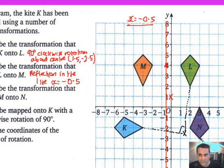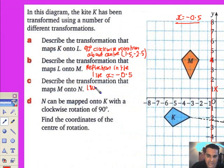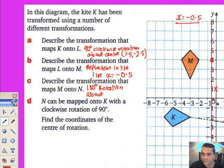It's 180 degree rotation, and of course you don't need to say clockwise or anti-clockwise, you end up in the same place. But you have to give the center, so it's about the point (0,1).